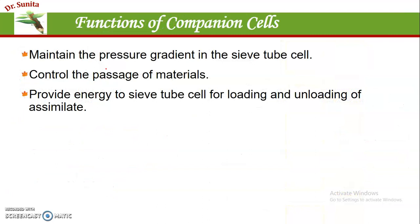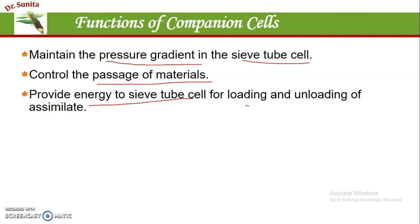The main function of the companion cell is to provide help to the sieve tube cell during transport. During transport, it maintains the pressure gradient in the sieve tube cells. It controls the passage of materials and provides energy to the sieve tube cells for performing loading and unloading during the transport of solutes.